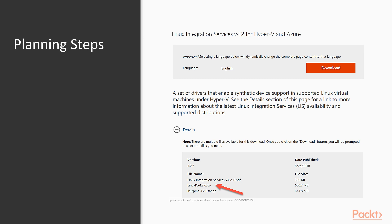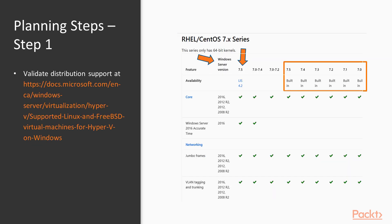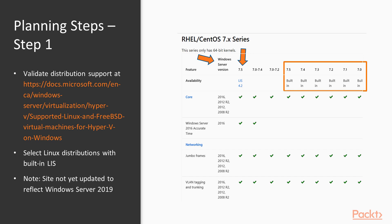Now, what about the planning steps? The first thing you need to do is validate your distribution support — validate if your Linux distribution is supported natively under Hyper-V. If it's not, you will need to find and download the Linux Integration Services. You can go to the link provided in Microsoft's documentation for Hyper-V support, which shows distributions with built-in LIS drivers. Just note that as of the time of authoring this course, Microsoft had yet to update this documentation for Windows Server 2019.